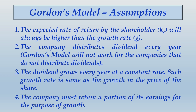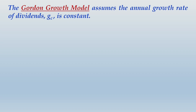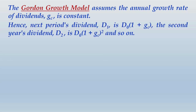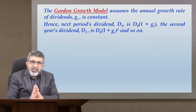The Gordon growth model assumes an annual constant growth rate of dividend, denoted as GC — where GC indicates constant growth. Hence, next period's dividend D1 equals D0 into 1 plus GC. The constant growth rate is symbolized as GC. If you want the second year's dividend D2, it will be D0 into (1 plus GC) squared, and so on.